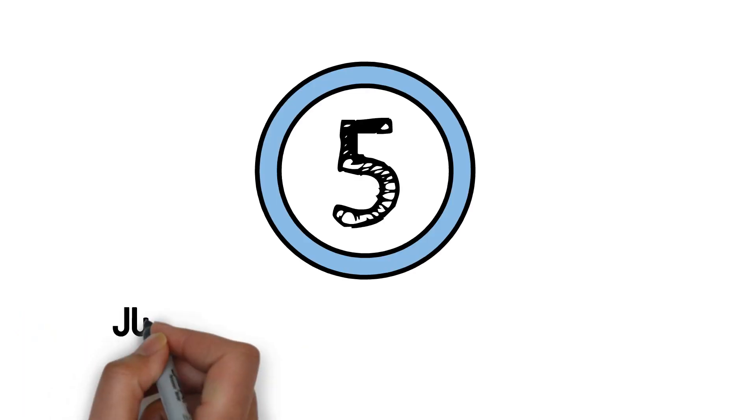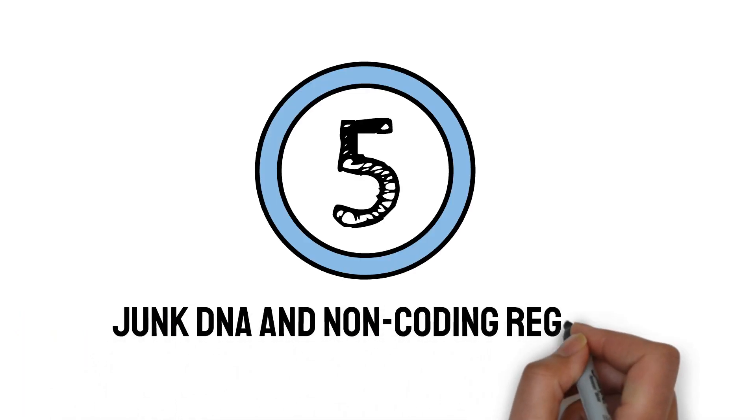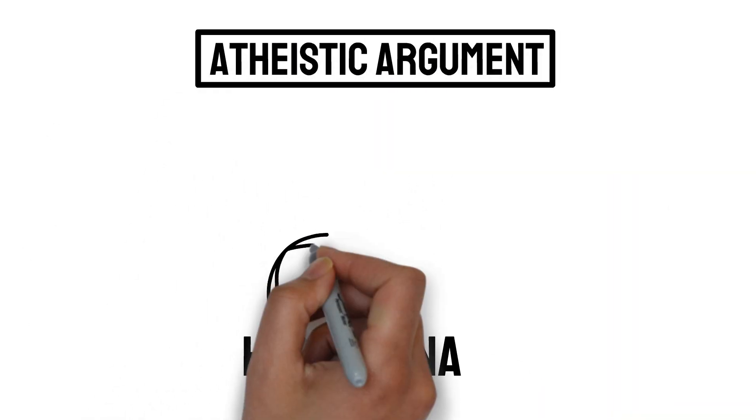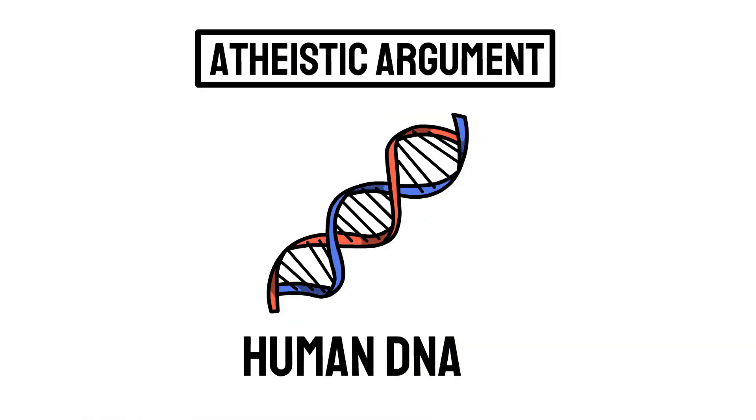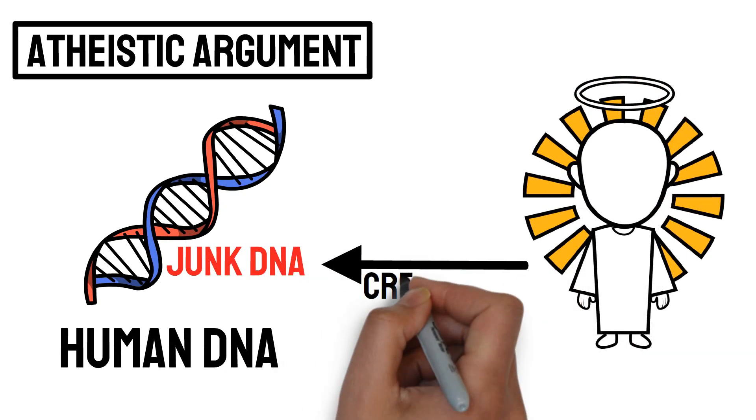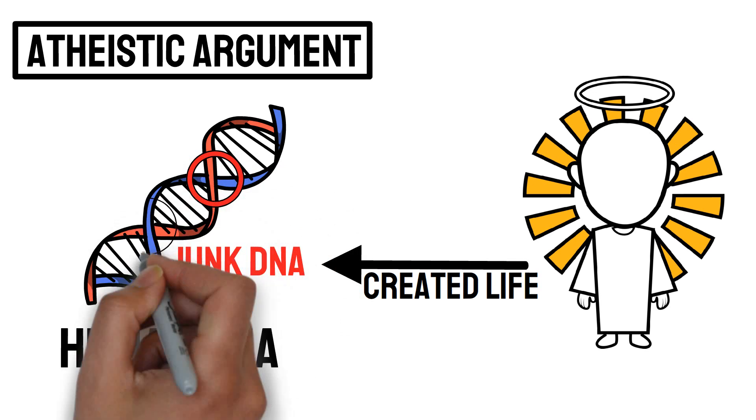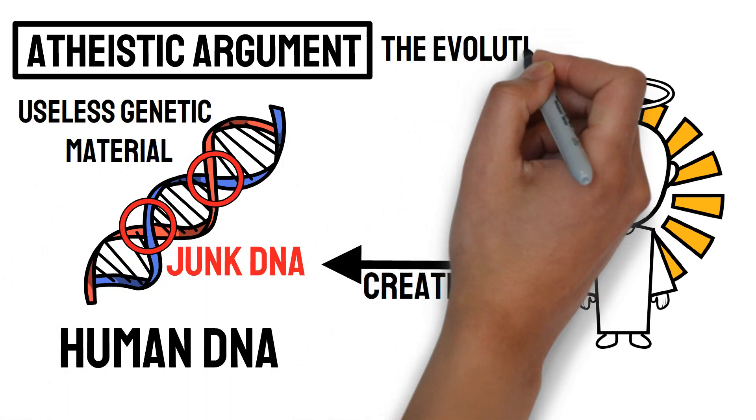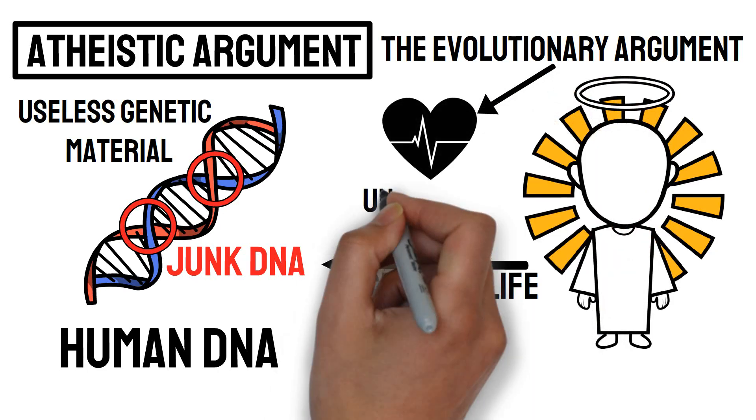Number five, junk DNA in non-coding regions. The atheistic argument is that the majority of human DNA consists of non-coding regions, once referred to as junk DNA. If an intelligent designer created life, it is unlikely that they would include vast sections of useless genetic material. This supports the evolutionary argument that life is the result of undirected processes.